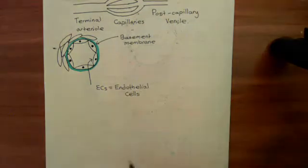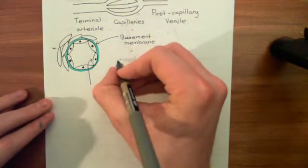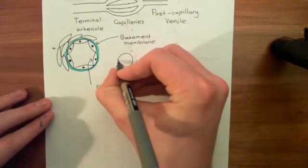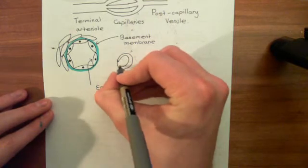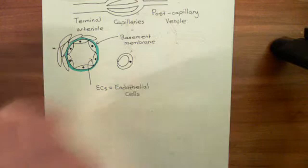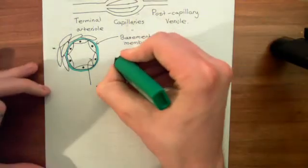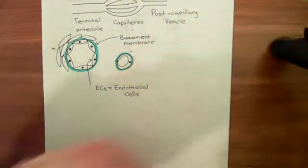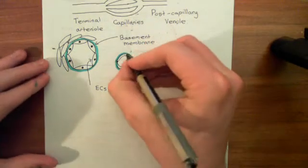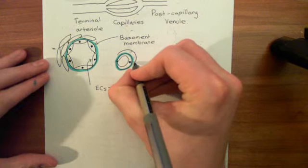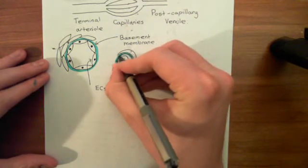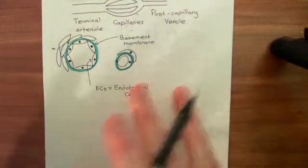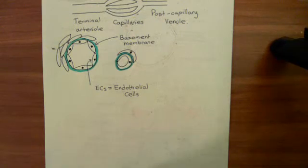Now let's turn our attention to the structure of a capillary. Capillaries are tiny — they have a circumference which can be spanned by a single endothelial cell, going the full way around. They again have a basement membrane around them, and they also have other types of cells that surround them: a special type of cell known as a pericyte, which has contractile properties, but they are dotted around — you don't have a continuous layer of them. They're just sort of dotted on the capillary, like starfish.